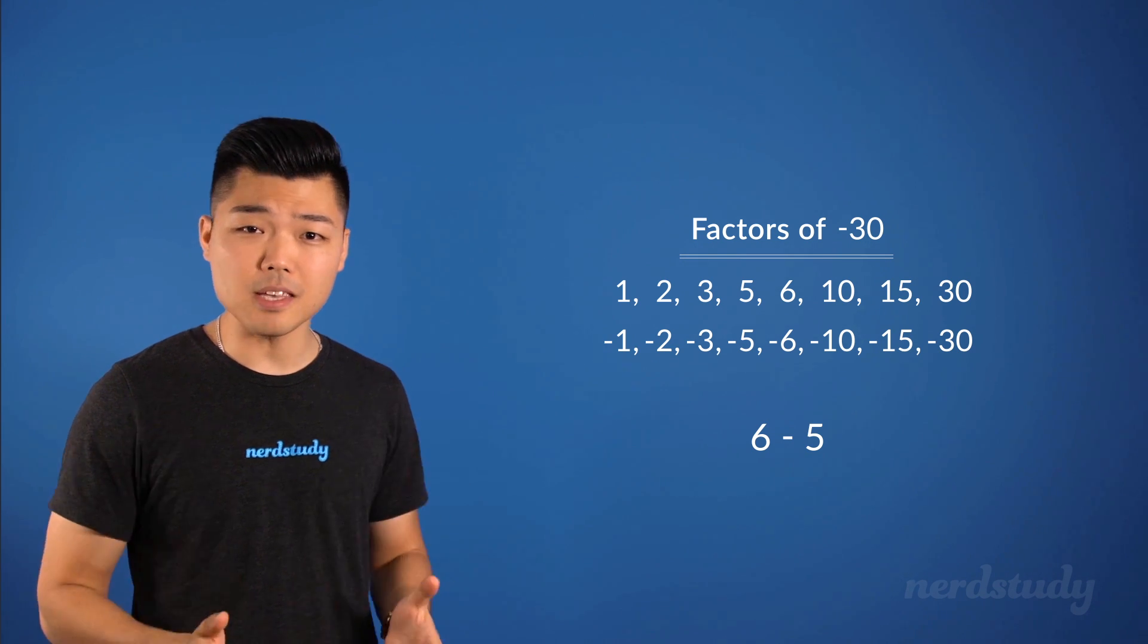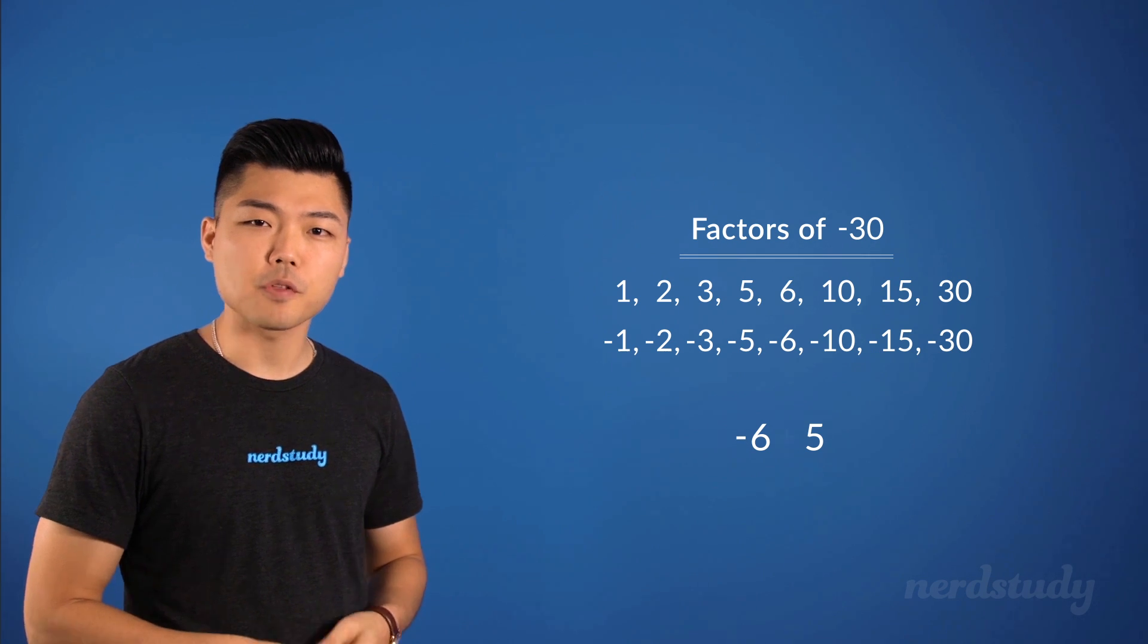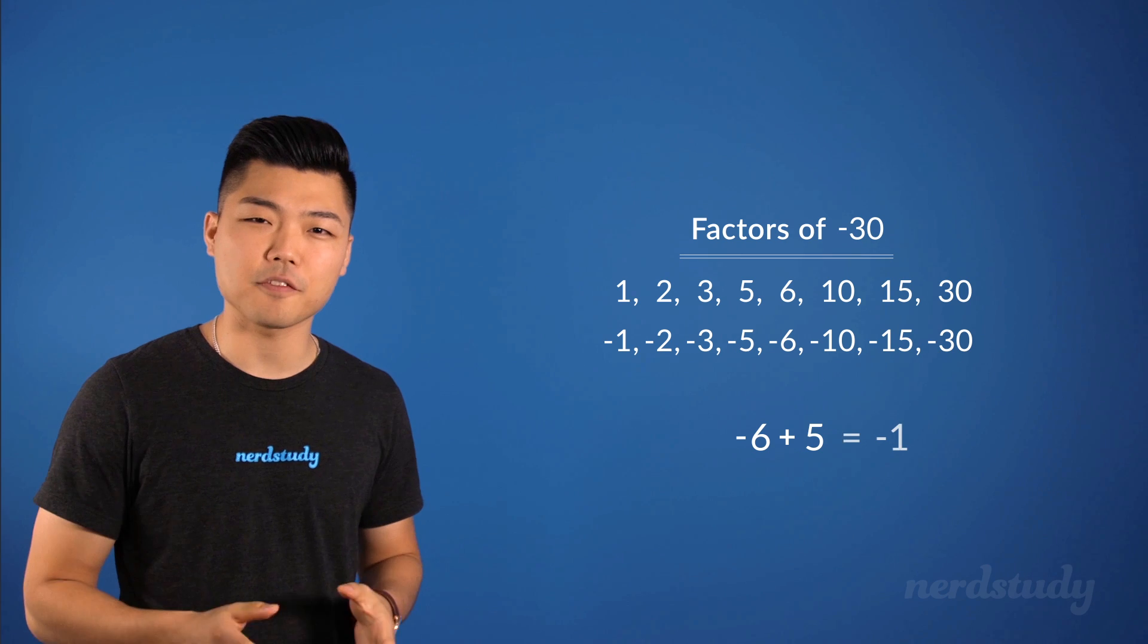And since the B is negative 1, the negative sign should be on the bigger number, so that when added together, that difference would show as a negative number as well.